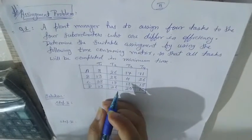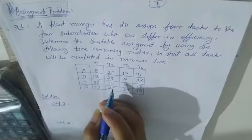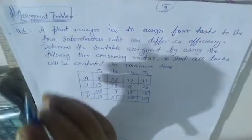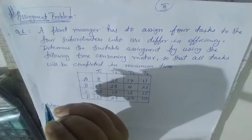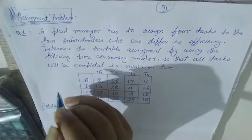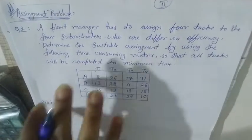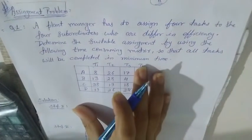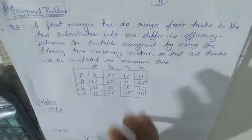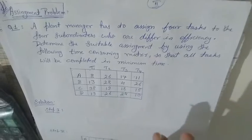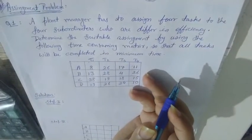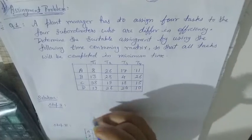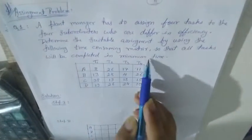Hello students. This video is for BBA and MBA second semester students who are studying Operation Research, specifically the assignment problem. The theory and working rules have been linked in the description box, so I suggest you review those first and then come to this video where we will solve a problem. In the assignment problem, you have workers and jobs, and you assign jobs to workers based on time or efficiency.